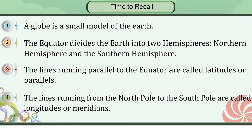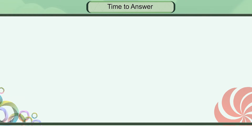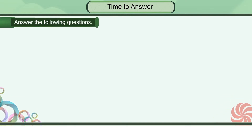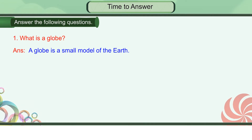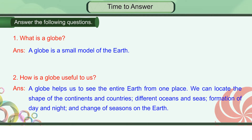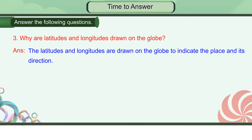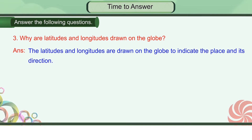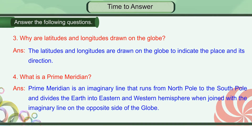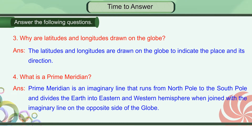Time to answer — for formative and summative assessment, answer the following questions: What is a globe? How is a globe useful to us? Why are latitudes and longitudes drawn on the globe? What is a prime meridian? What is the axis of the Earth? What do you mean by the equator?